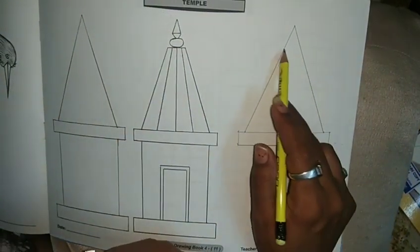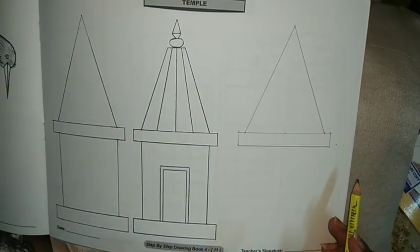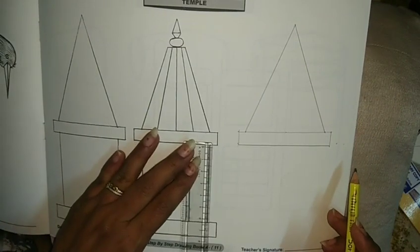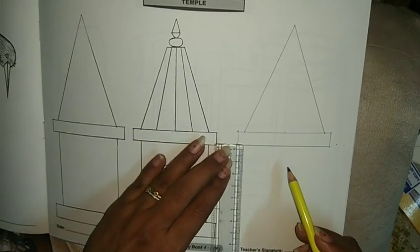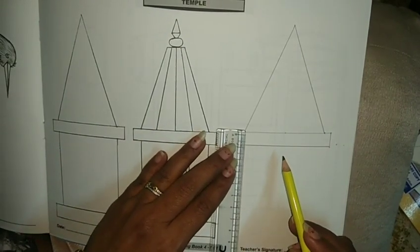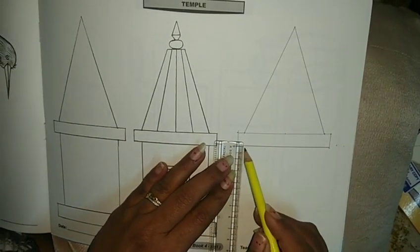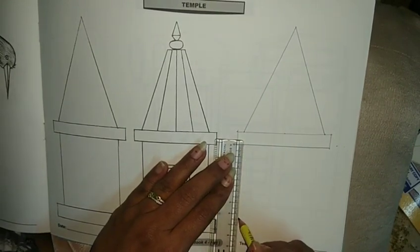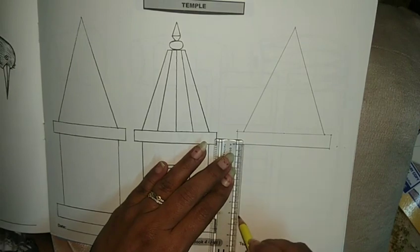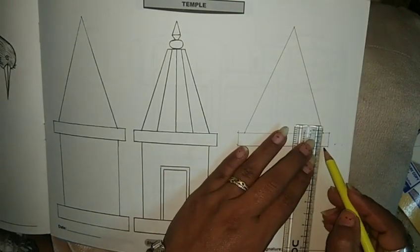Now let's move to the bottom part. Here you can see it is 6 and a half centimeters, so again we will start from here till 6 and a half centimeters. On this side, here we have a dot.